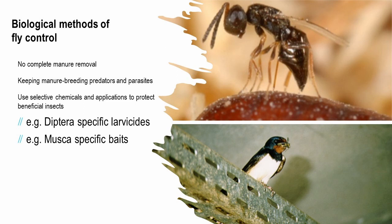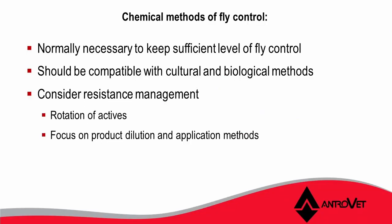The next method is the biological method. We use selective chemicals and applications to protect beneficial insects — insects that are diptera-specific, like larvicides. The last method is the chemical method, normally necessary to keep a sufficient level of fly control. It should be compatible with cultural and biological methods. Things to consider include resistance management — we need to rotate actives regularly, seasonally — and we need to focus on products, their application methods, and especially their dilution.